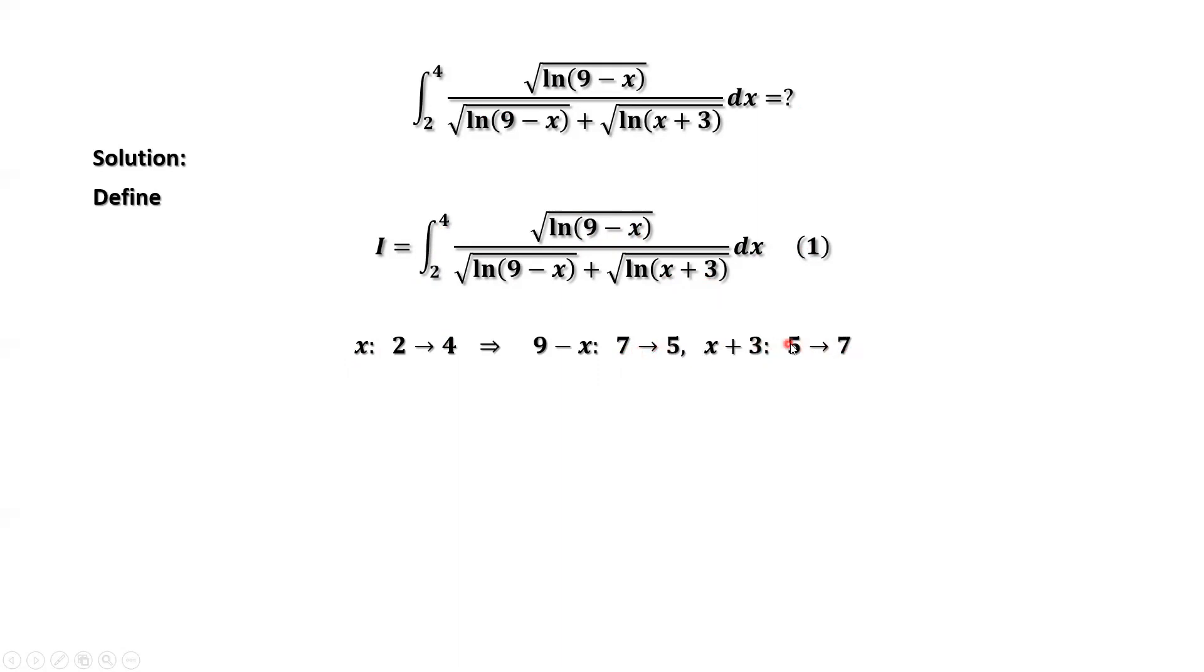7 to 5, 5 to 7. This means 9 minus x and x plus 3 are symmetric. Therefore, we define a new variable such that y plus 3 equals 9 minus x.